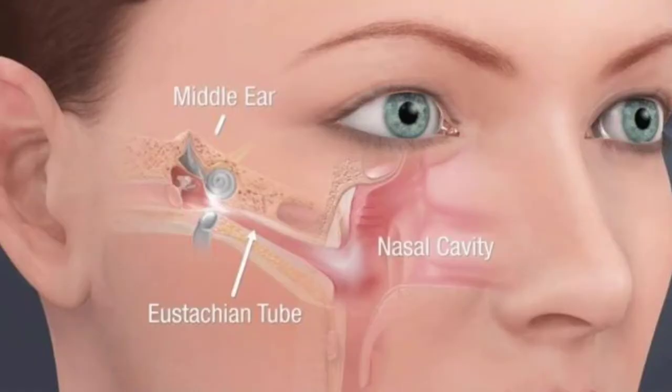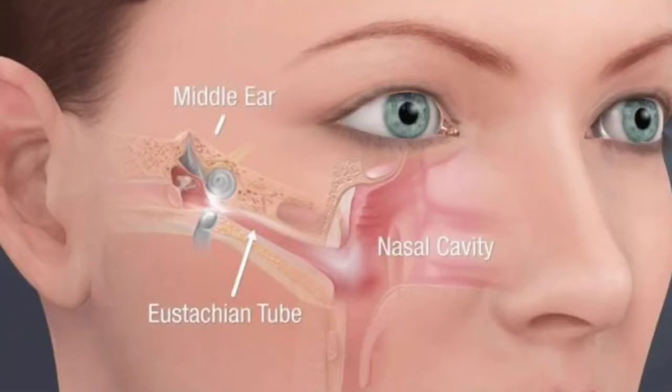Now let's look at a few internal factors that can give rise to a blocked ear. First and foremost is having a common cold. As mentioned, the middle ear is like a balloon filled with air, and the eustachian tube supplies air to the middle ear. One end of this tube is connected to the middle ear and the other end is connected behind our nose to the upper throat. When we get a cold, there is a high chance this tube gets blocked, causing ear pressure changes and a blocked sensation. That's why when we get a severe cold with a nasal block, we feel our ears are also blocked.